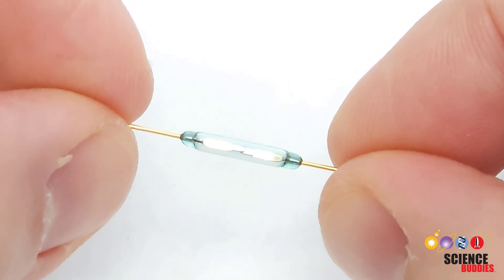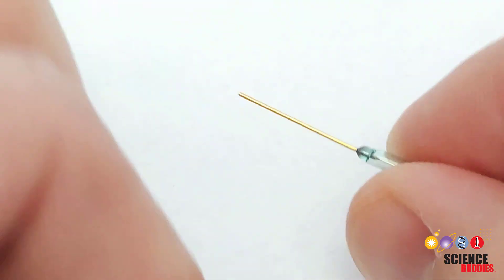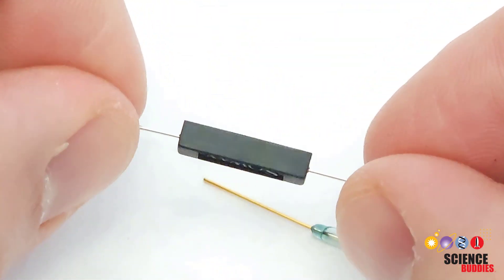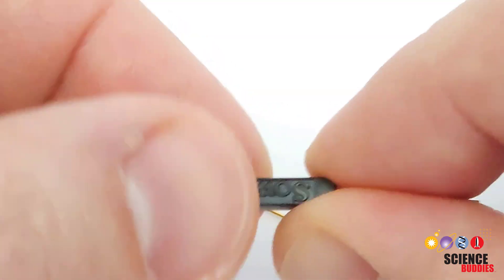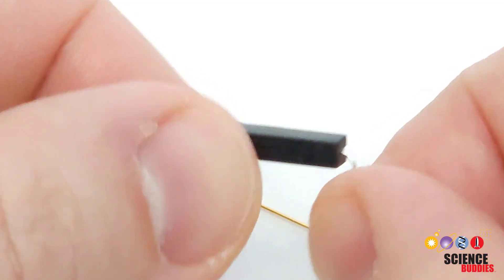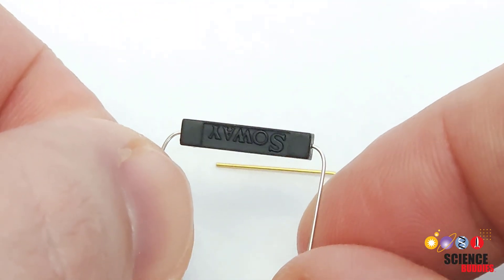These glass capsules are usually pretty fragile and can break if you bend the wires to put them into a breadboard. So you can also buy reed switches encapsulated in plastic, which is a little sturdier and you don't have to worry about breaking the glass when you bend the leads. So this is the type I will be using in this project.